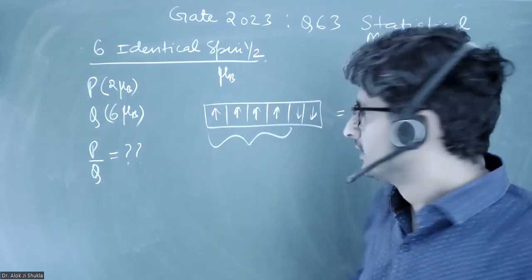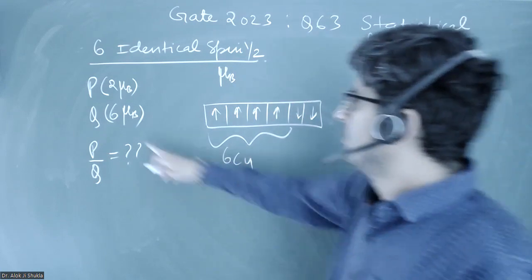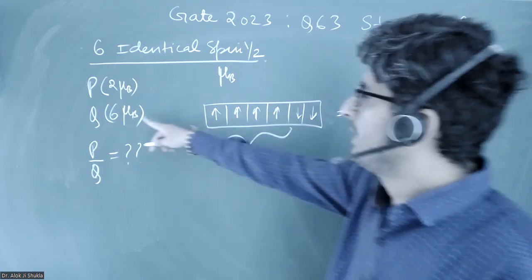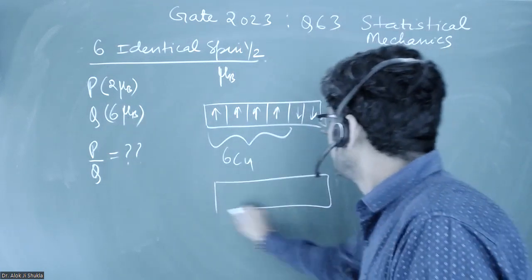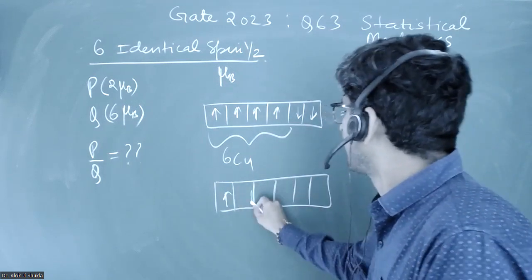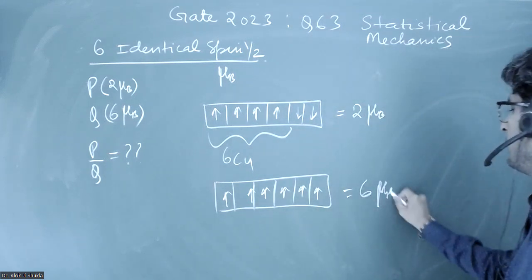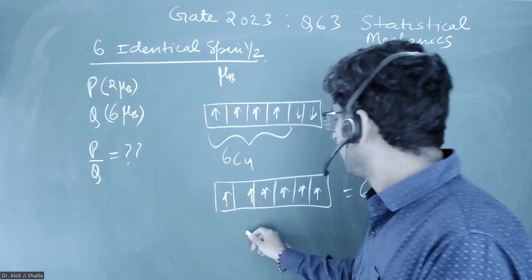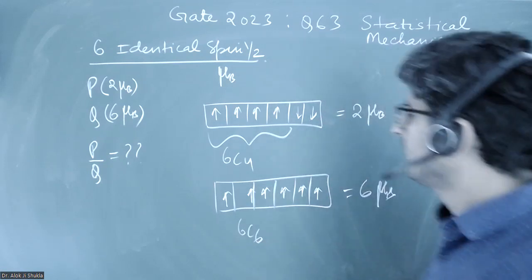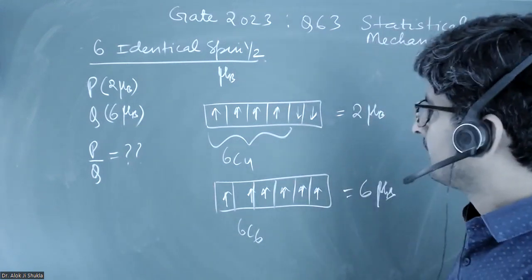With six total spins, having four spin-up can be done in 6C4 ways — this gives us P. For Q, where the magnetic moment is 6μ_b, all six spins must be up. That can be done in 6C6 ways, which is only one way.